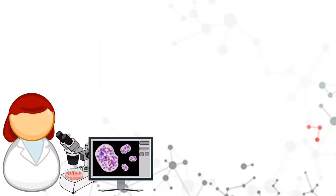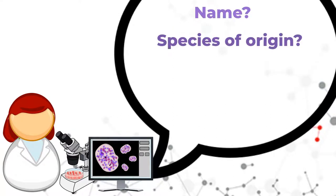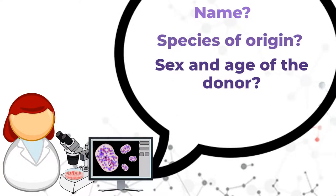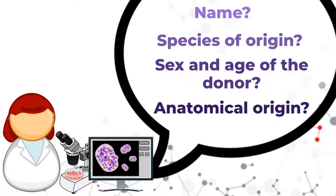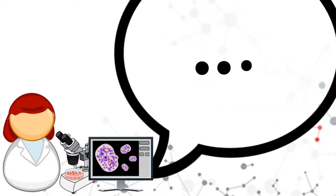For your submission, you may indicate the correct name of your cell line, the species of origin, the sex and age of the donor, and the tissue or organ of origin. Do not hesitate to include as much relevant information as possible.